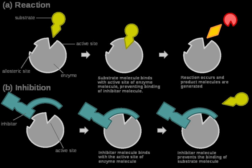In competitive inhibition, an inhibitor that resembles the normal substrate binds to the enzyme, usually at the active site, and prevents the substrate from binding. At any given moment, the enzyme may be bound to the inhibitor, the substrate, or neither, but it cannot bind both at the same time. During competitive inhibition, the inhibitor and substrate compete for the active site.